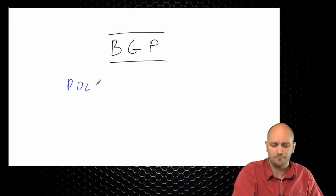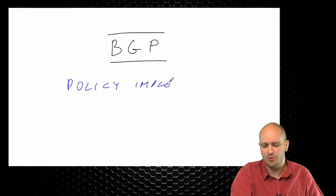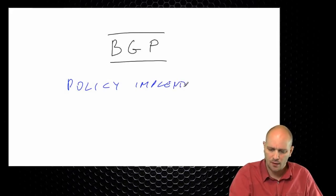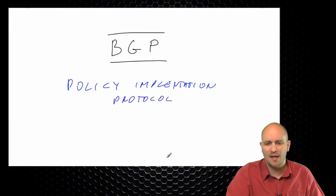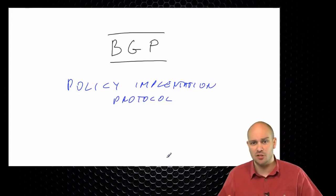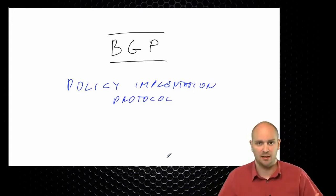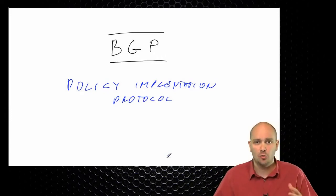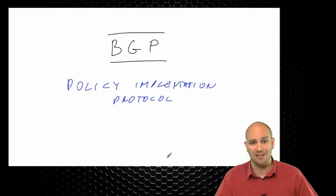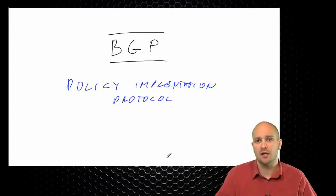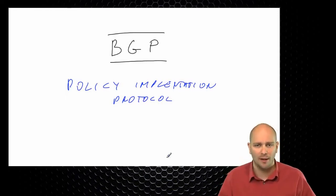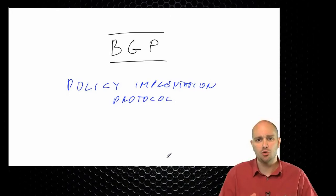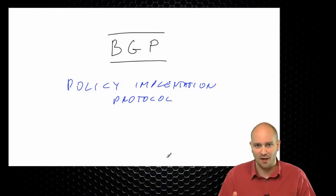What I mean by that is that BGP can be used, of course, to route traffic, but it really is a way for us to implement some of the business decisions, some of the non-technical decisions, some of the non-technical policies into our network so that we can deliver the traffic where we want it and how we want to deliver this traffic. And for this reason, BGP can, from time to time, be intimidating and overwhelming in its use of multiple attributes.